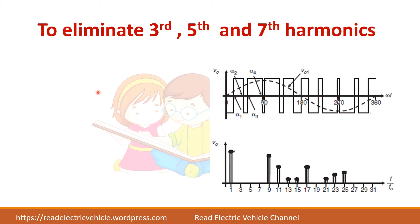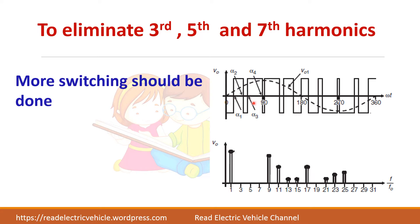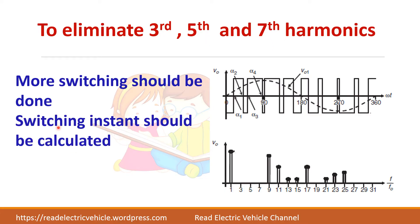Now, if you want to eliminate the 3rd, 5th, and 7th harmonics, the waveform must change — you may need to turn on and off more times to eliminate all three harmonics, and you have to calculate the switching instants. As the number of pulses increases, the switching loss will also increase and calculations become more difficult.